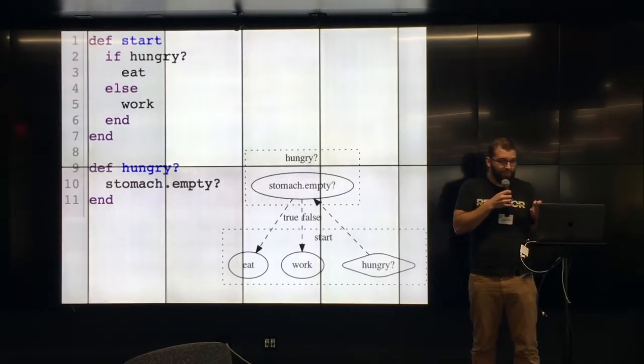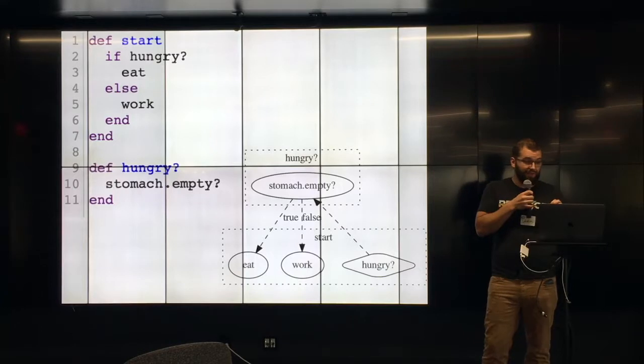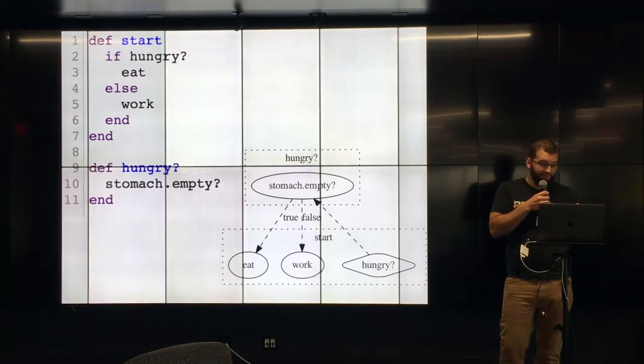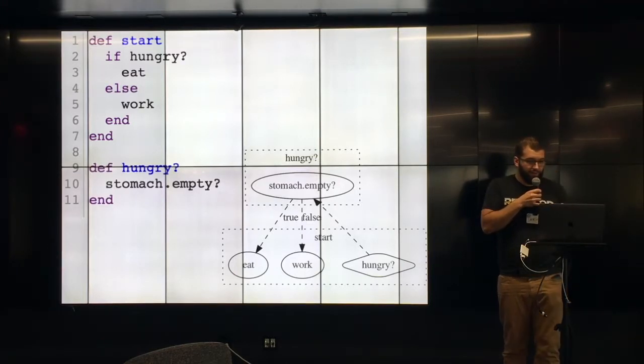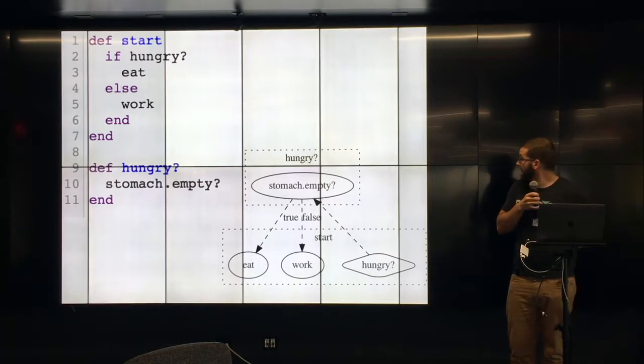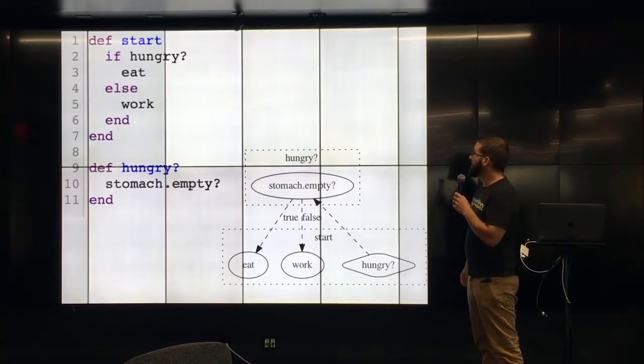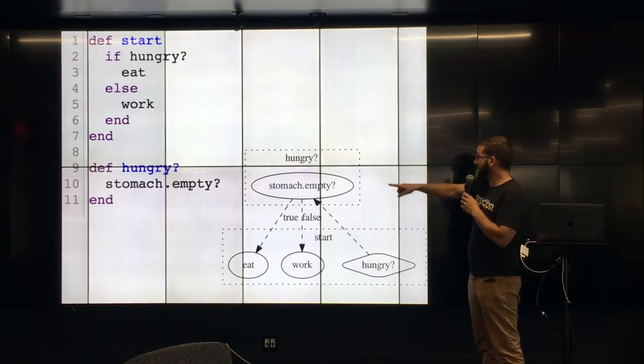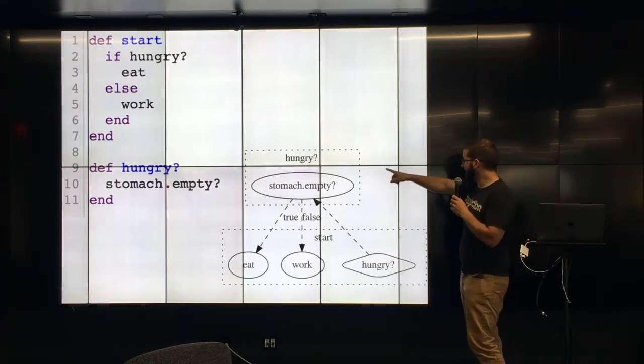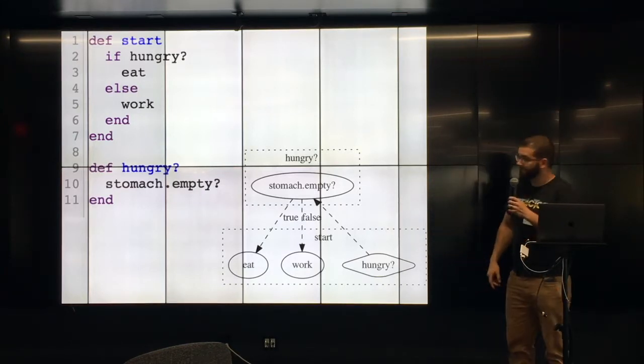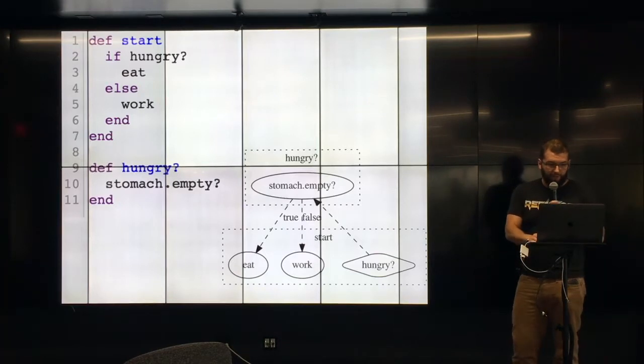Here's another example. This shows how it does method referencing. We actually have multiple graphs that are kind of linked together. So we've got the start method here. We've got the start method, and it does if hungry, and that checks the stomach to see if it's hungry. And the result of that is we have the true-false branch where we eat or work. That's kind of cool.